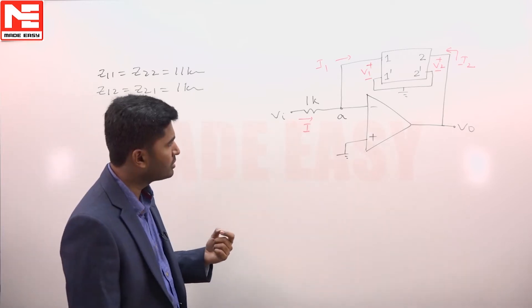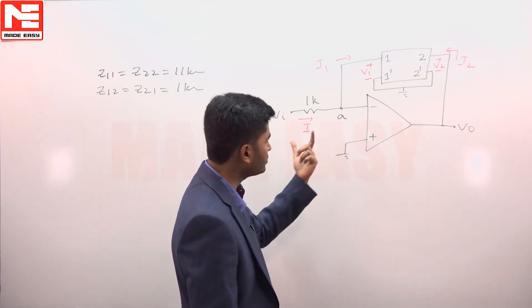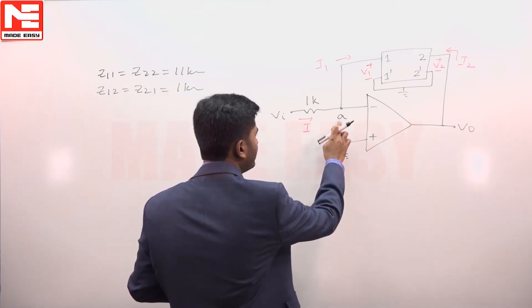I will first use the virtual ground or virtual short circuit property. Because of that V i should be equal to 0.